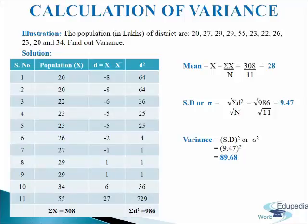We will add up the values and get sigma d squared equals 986. Now with this data we will calculate standard deviation, which equals the square root of sigma d squared divided by n. We will put in the values and get 9.47 as standard deviation. Now we will calculate variance: variance equals standard deviation squared, so 9.47 squared gives 89.68 as variance.